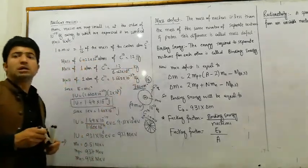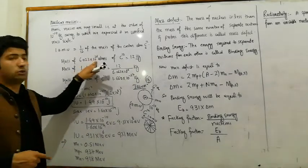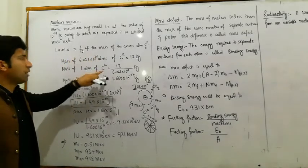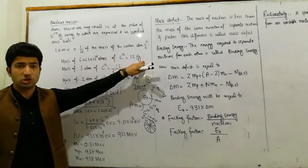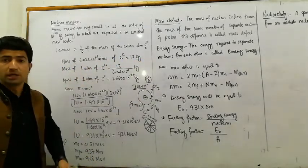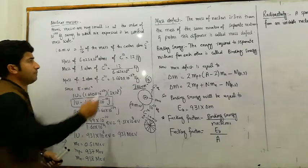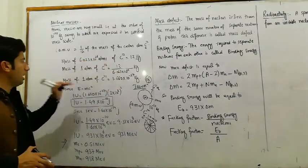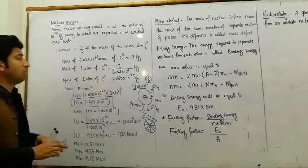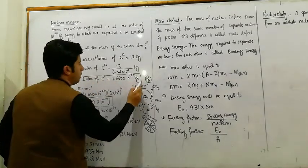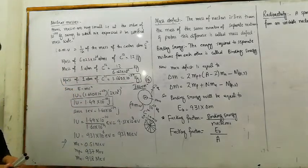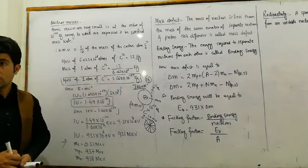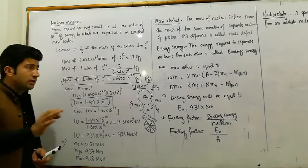12 grams of carbon-12 contains 6.023 × 10^23 atoms. So the mass of one atom of carbon-12 is 12 divided by 6.023 × 10^26, which gives 1.660 × 10^-27 kg. This is the value of 1 atomic mass unit.